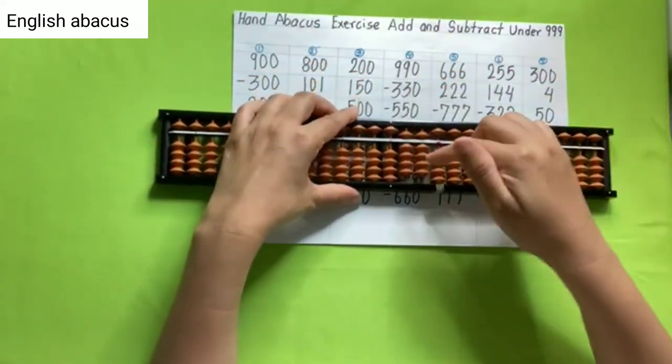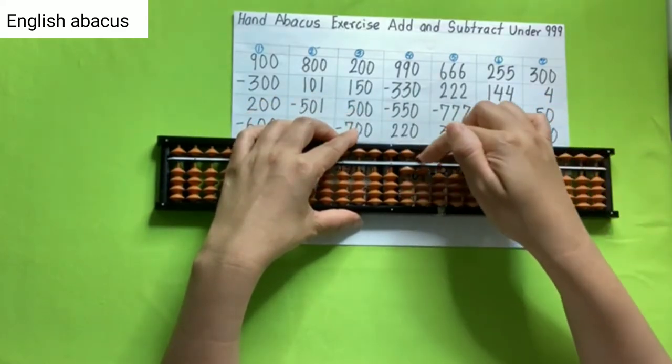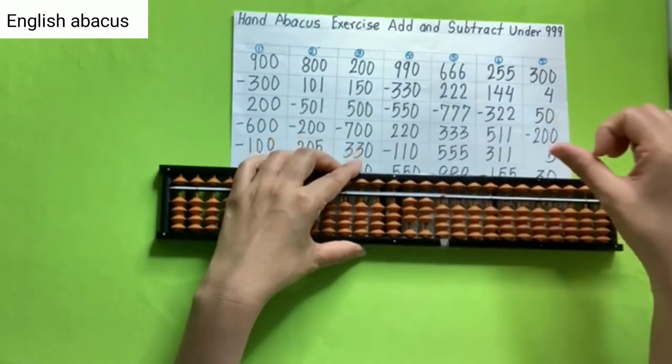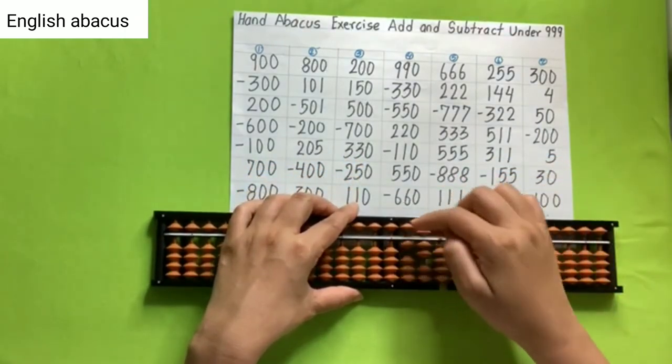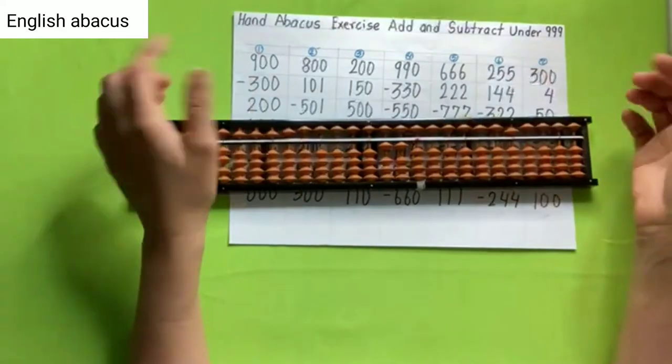990, reduce 330, reduce 550, add 220, reduce 110, add 550, and reduce 660, and your answer is 110.